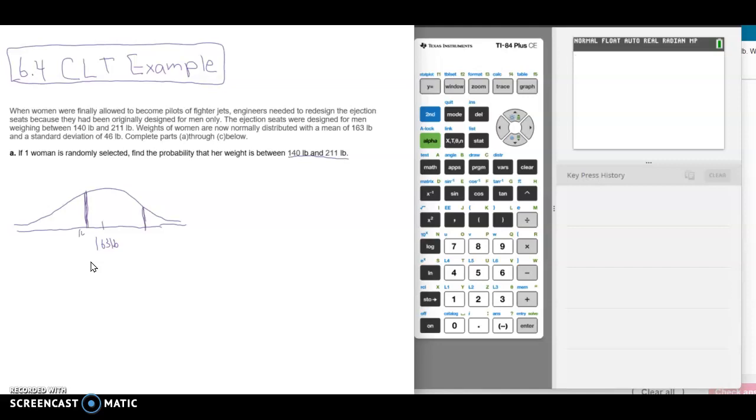I'll draw 140, 211, and I'm going to label this mean here as mu. And I'm going to shade the area in between. This area represents a probability: the probability that an individual x value is between 140 and 211.